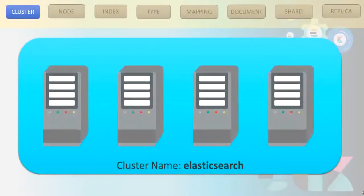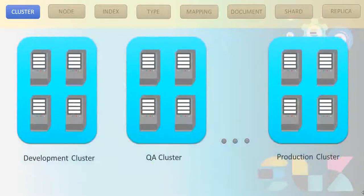The very first concept is a cluster. A cluster is a collection of nodes and has a unique name. If you do not provide any name to the cluster, then it uses the default name 'elasticsearch'. We can create clusters specific to each environment — for example, if we have a development environment, we can create a development cluster; if we have a QA environment, we can create a QA cluster.